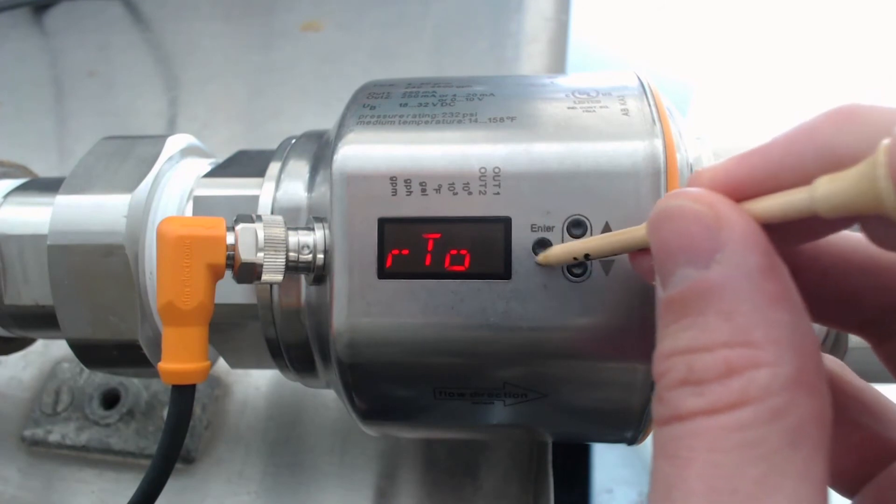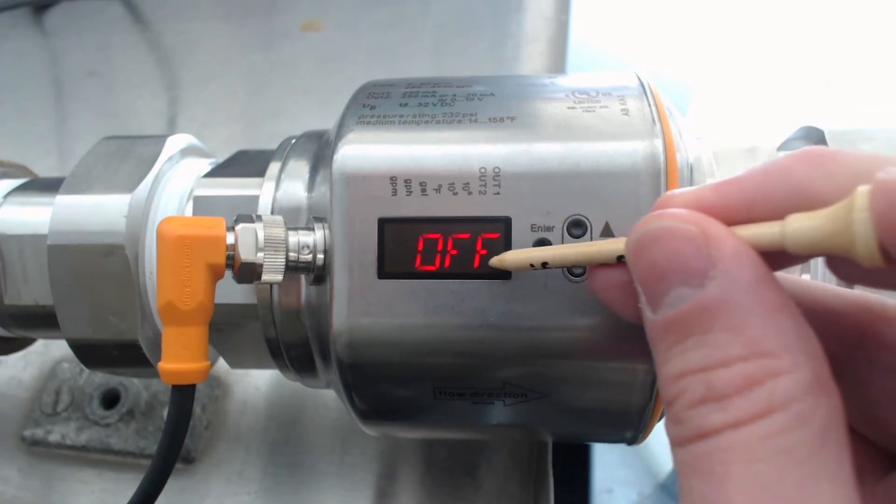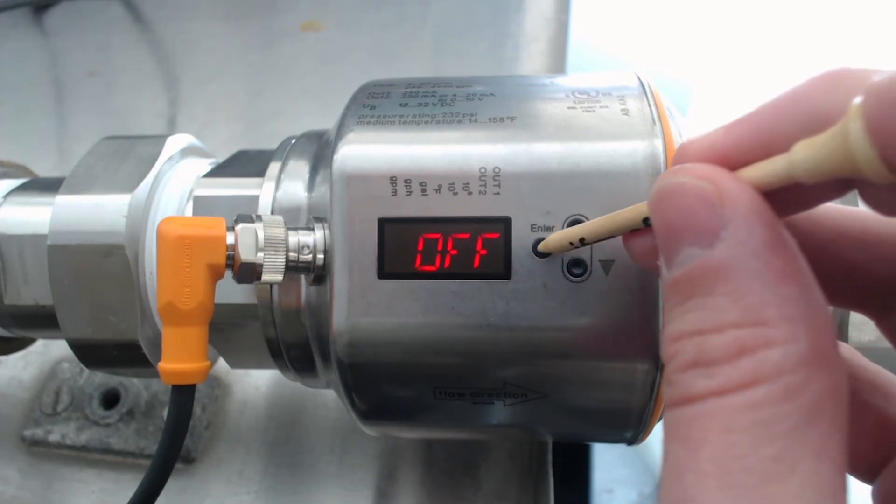Using the lower button, scroll to RTO and press Enter. The word OFF appears. That's it.